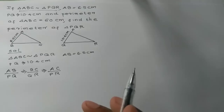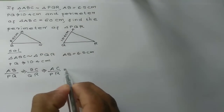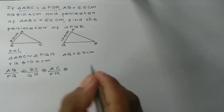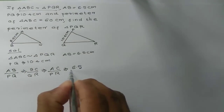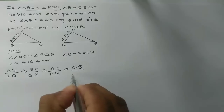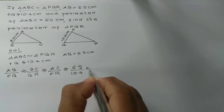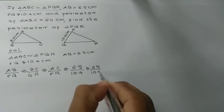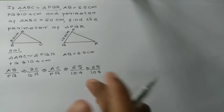From the problem, we know AB equals 6.5 and PQ equals 10.4. We set up the proportion: AB divided by PQ, using the corresponding sides of the similar triangles proportionally.